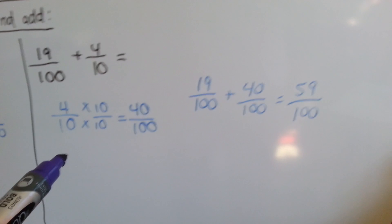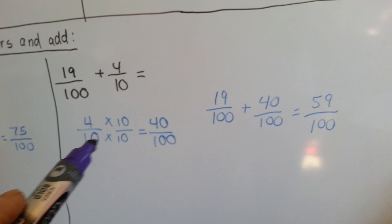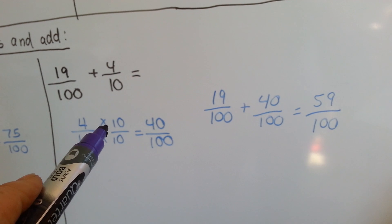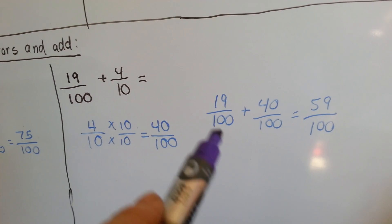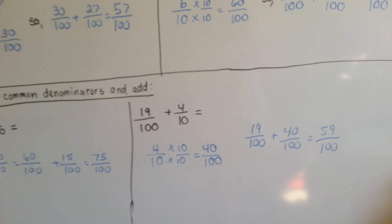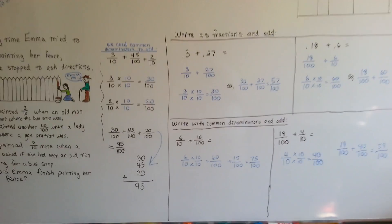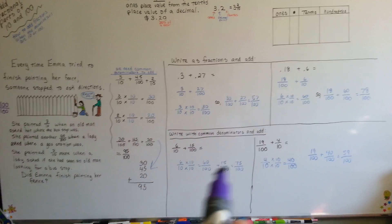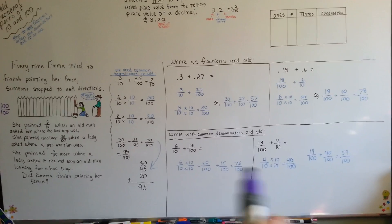19 one-hundredths plus four-tenths. We need this tenths to become 100, and we ask ourselves, what happens to 10 to become 100? It needs to be multiplied by 10. The numerator of 4 got jealous — it wants to be multiplied by 10 also. 4 times 10 is 40. So now we've got 19 one-hundredths plus 40 one-hundredths, and that's 59 one-hundredths. So if you've got a denominator that's a 10 and you need to add it to a denominator that's a 100, just multiply it by 10 to make it equal 100, and then multiply the numerator by the same amount. That's how we raise fractions to higher terms.